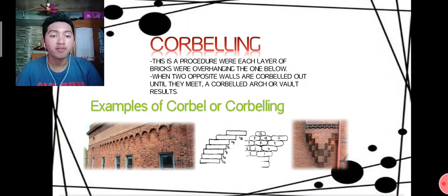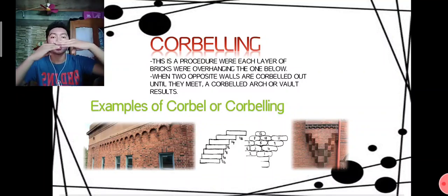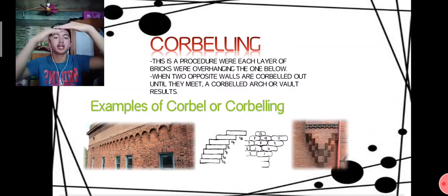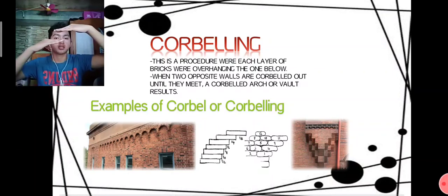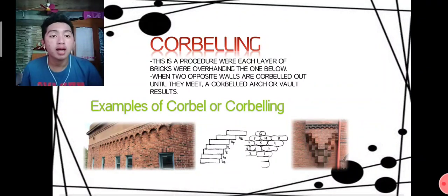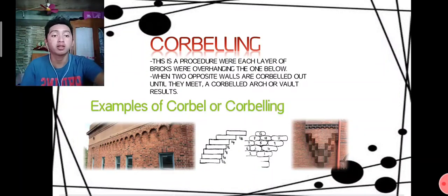These are examples of corbelling. One brick overhangs another brick, and they are stacked so that each course projects slightly outward, allowing the structure to create various forms or different designs.